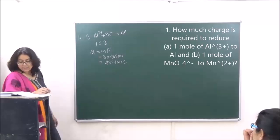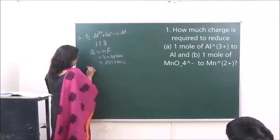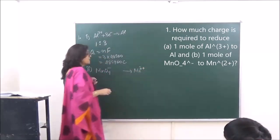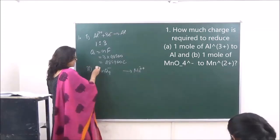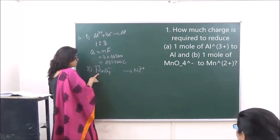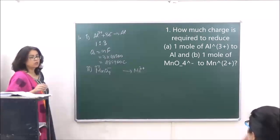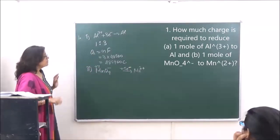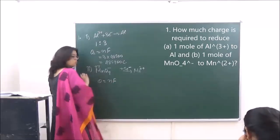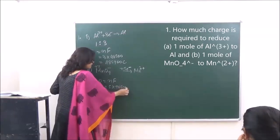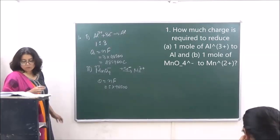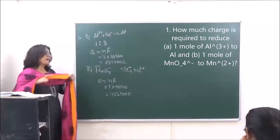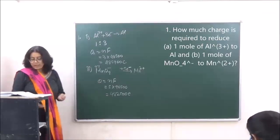For the second part, MnO₄⁻ to MnO₂: the oxidation state of manganese in MnO₄⁻ is +7, and in MnO₂ it is +2, so the oxidation state changes from +7 to +2. The electron exchange is 5. Therefore Q equals NF equals 5 into 96500, which comes to 482500 coulombs.